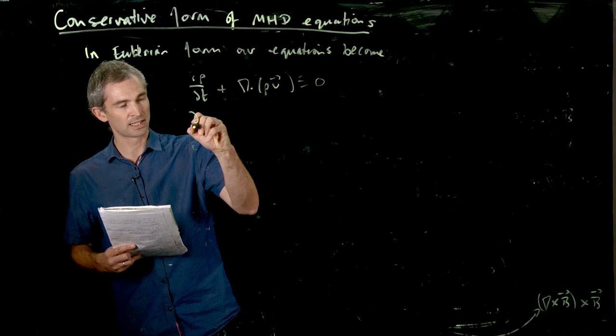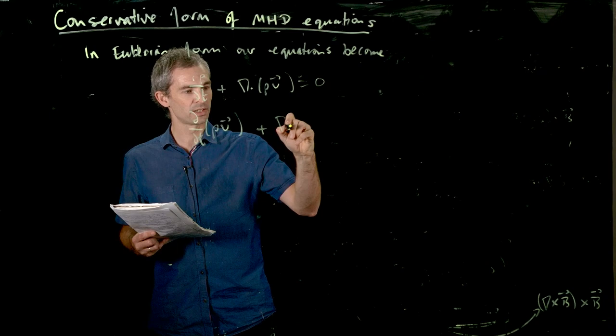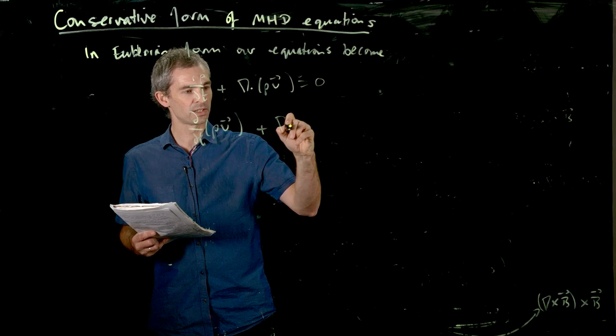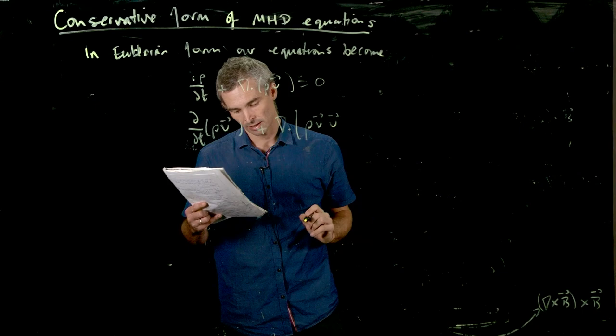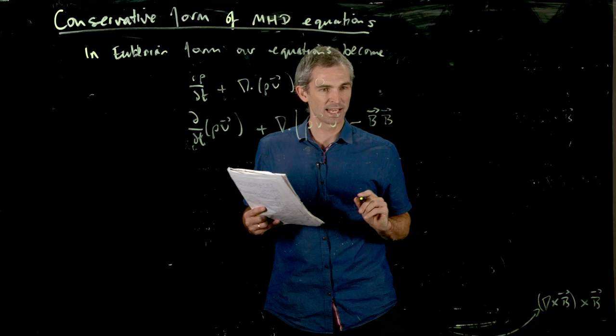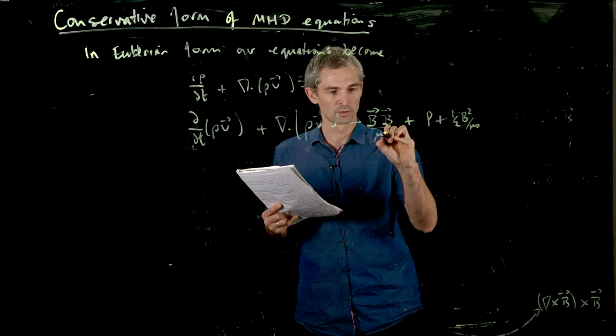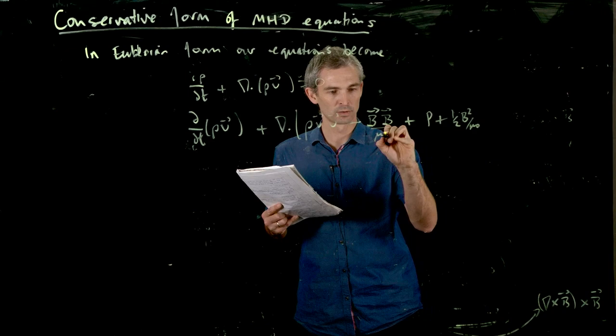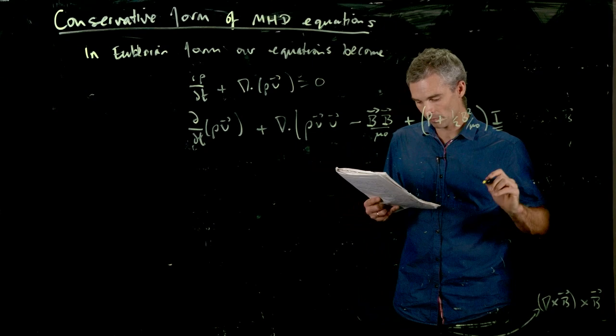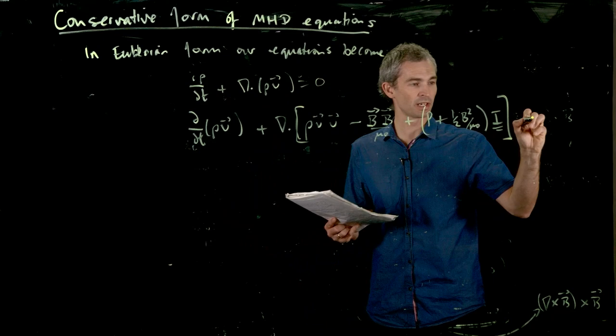So the momentum equation becomes a d dt of rho v plus the divergence. So it's the same stuff as without magnetic fields, rho v v, minus, now we've got this stress tensor. So the stress tensor, we could write in dyad notation, with a b b, plus p plus a half b squared on mu naught. This is on mu naught, identity matrix, plus your square brackets here, equals zero. So that's conservation form for our MHD momentum equation.